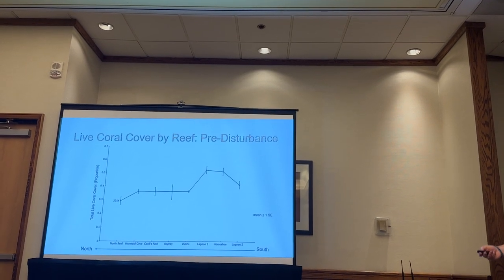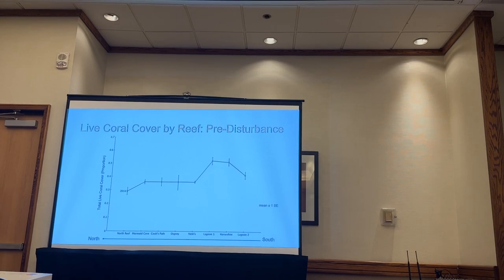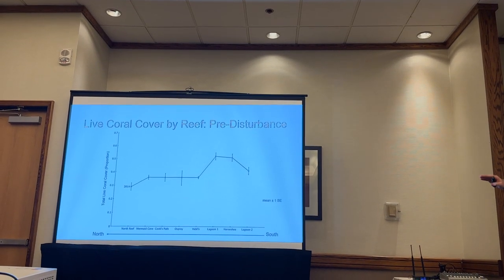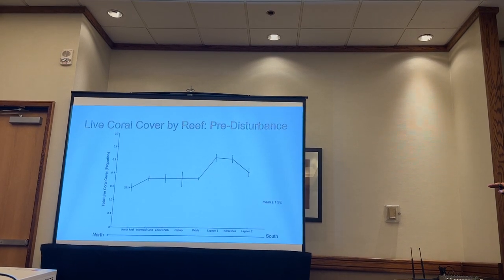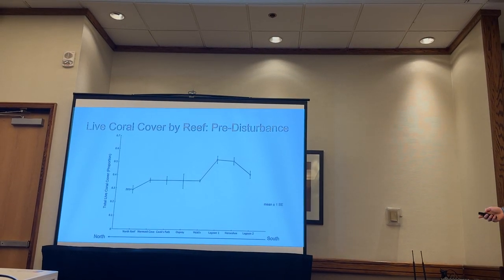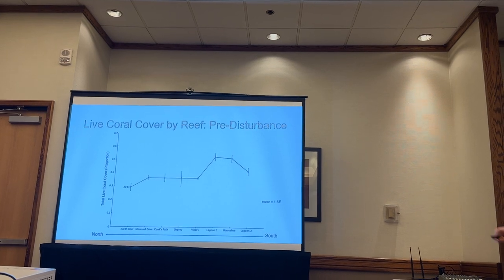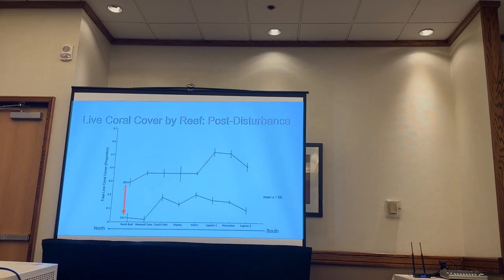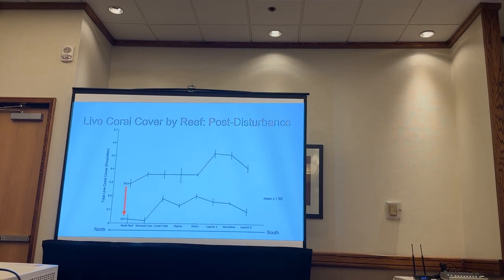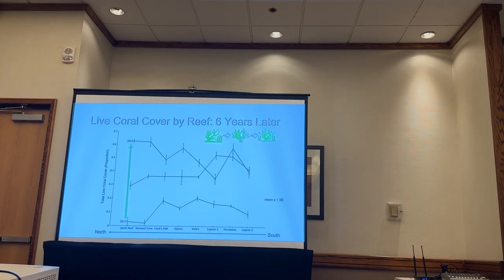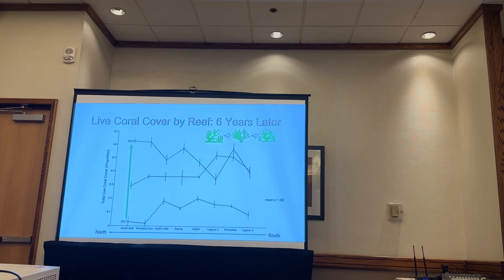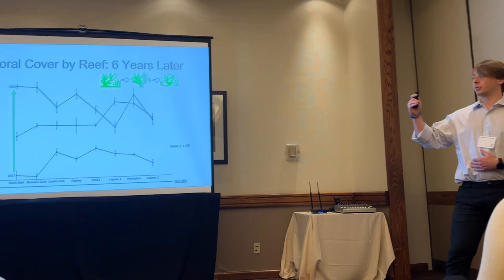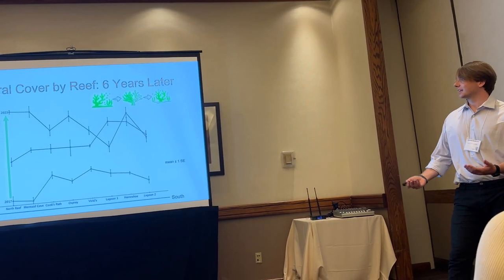To summarize what I found — this graph shows 2014 data with total live coral cover proportion on the y-axis and each study site on the x-axis, ranging from north to south across the island. After that four-year wave of disturbances, as one would expect, there was a pretty significant decline in cover at each site. When I went out in 2023, there was actually pretty significant recovery at all sites, with six out of eight actually going above pre-disturbance 2014 levels, which was exciting to see.